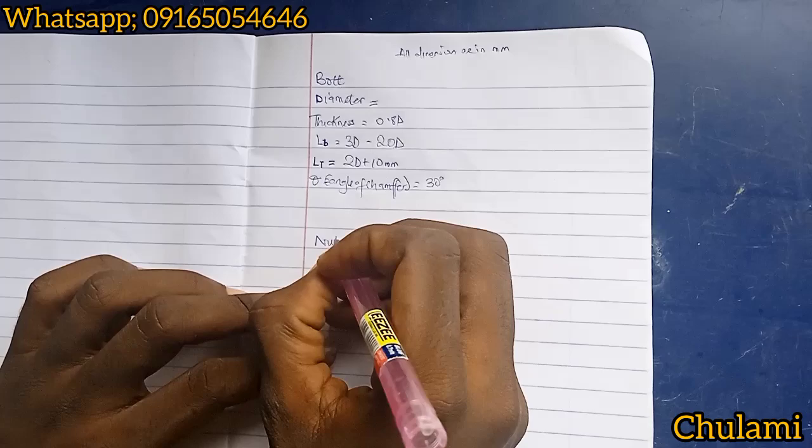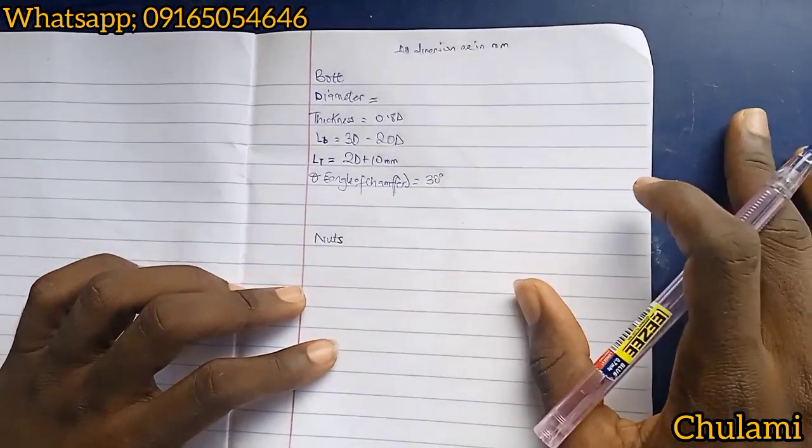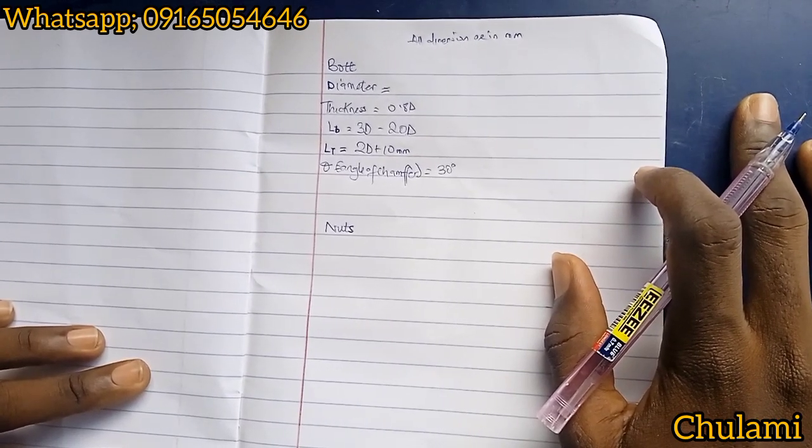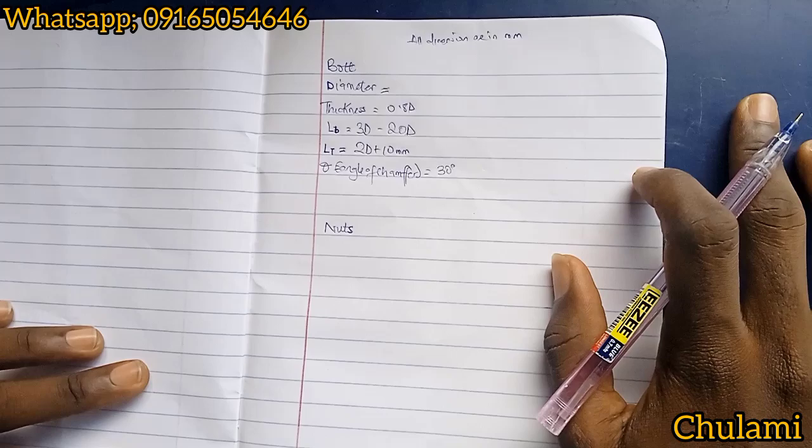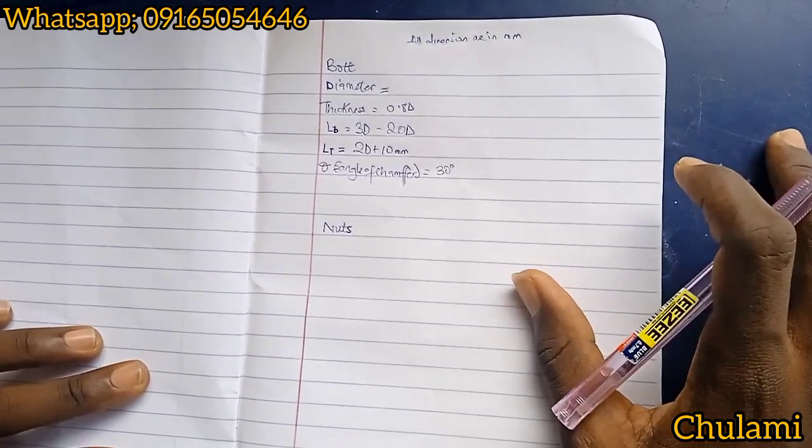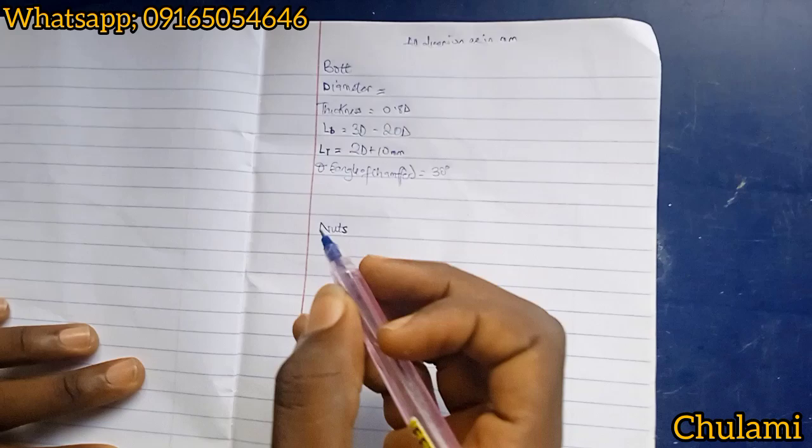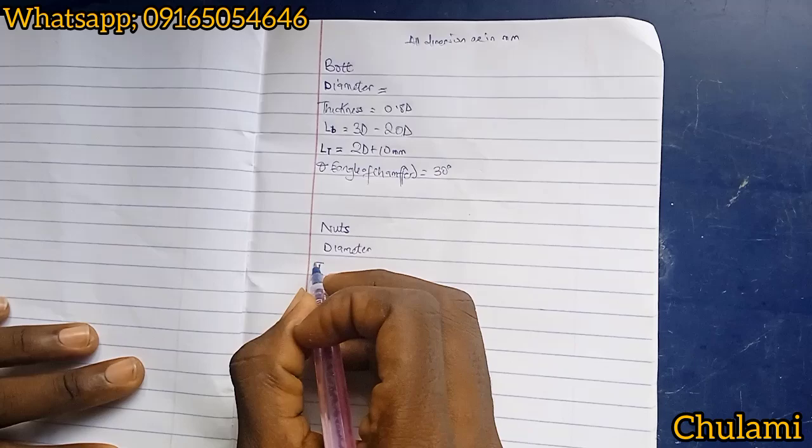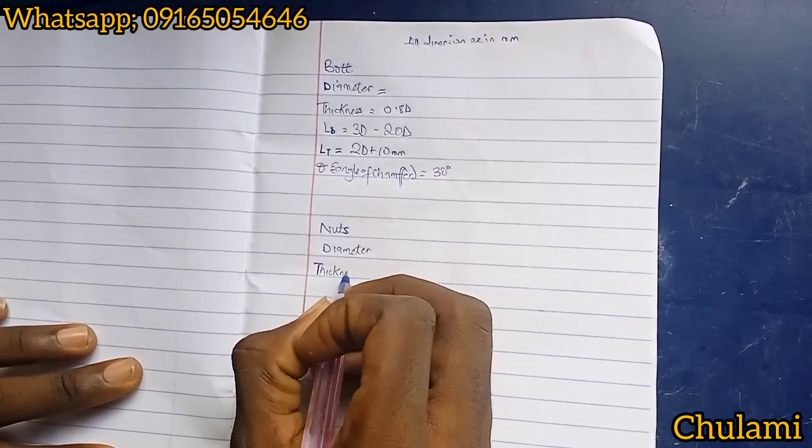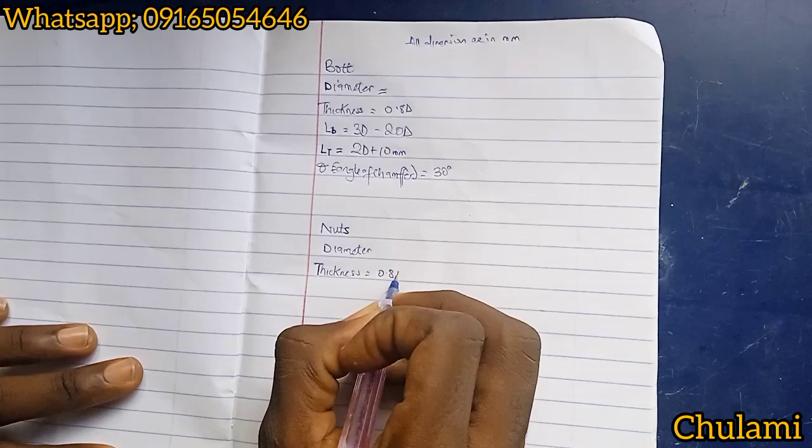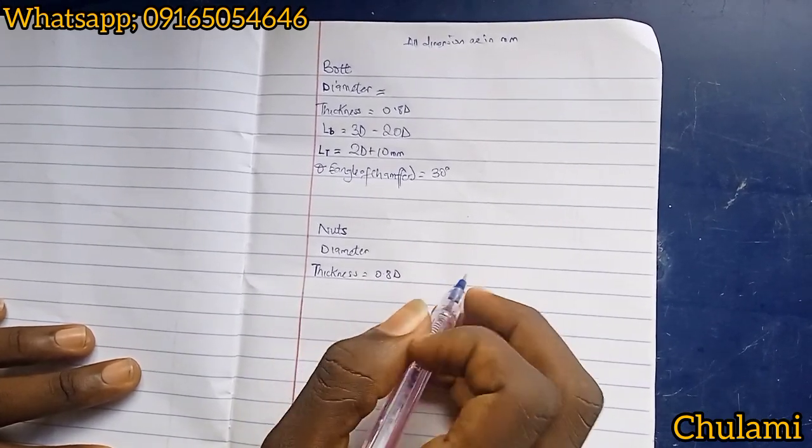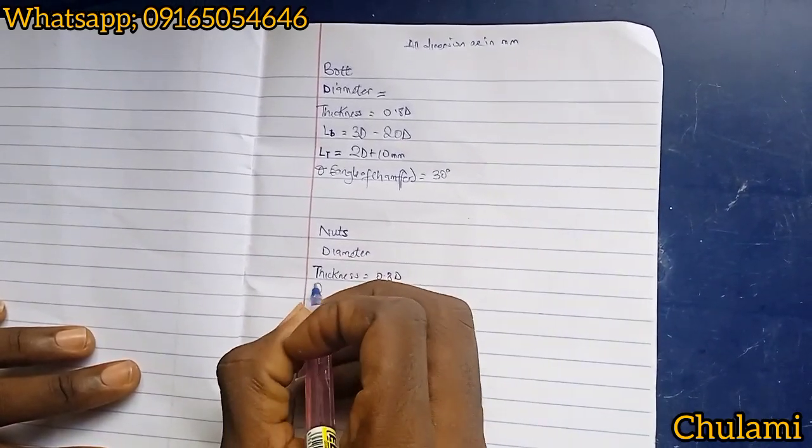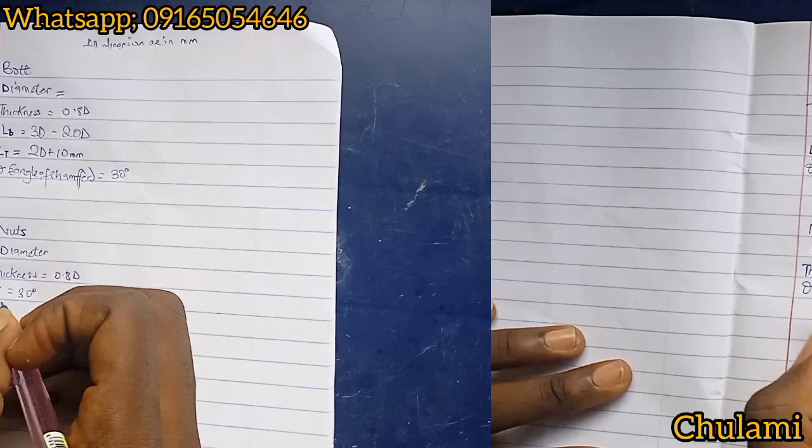Let's look at nuts now. We have different types of nuts - we have lock nuts, we have different types. For students here in RSU, we'll be using your exam-based type of nuts. Here we know the diameter, which must be given. And our thickness of the nuts, that is our nut head, is equal to 0.8d. This is basically what you need to draw a nut - just these two parameters. Your chamfer angle is 30 degrees.